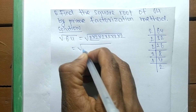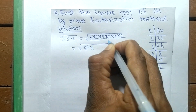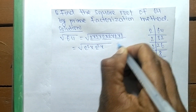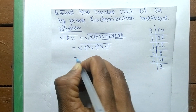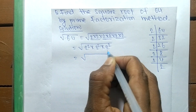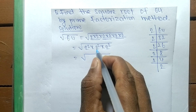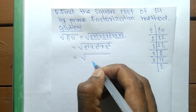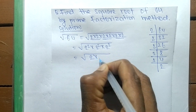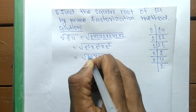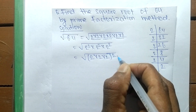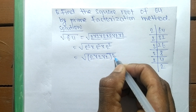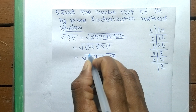Now we make squares of all these prime factors: 2 into 2 is 2 squared, 2 into 2 is 2 squared, and 2 into 2 is 2 squared. We then take the common square from all these numbers, giving us (2 into 2 into 2) whole squared.